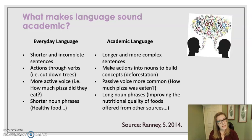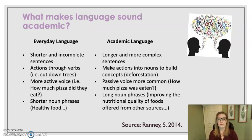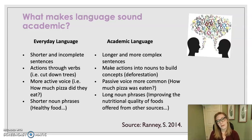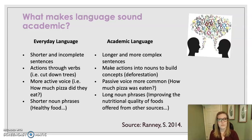In everyday language, we use more active voice, like 'how much pizza did they eat.' In academic language, we use more passive voice: 'how much pizza was eaten.' In everyday language, we use shorter noun phrases, like 'healthy food.' In academic language, we use longer noun phrases, like 'improving the nutritional quality of foods offered from other sources.'